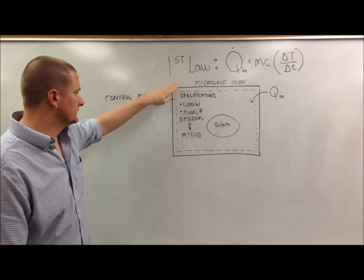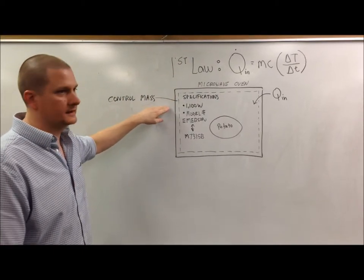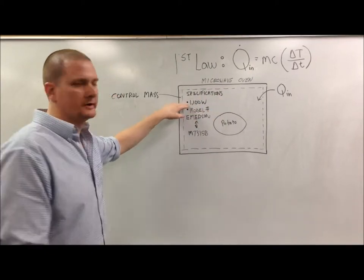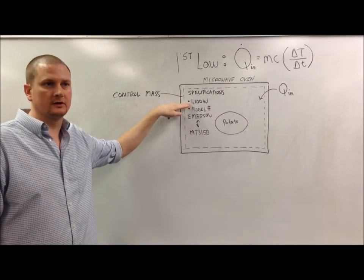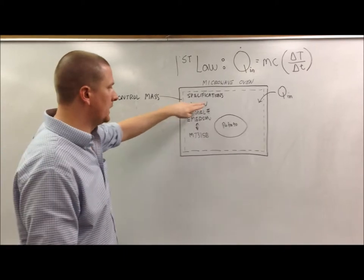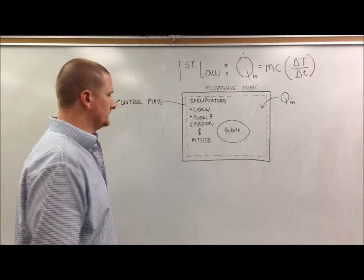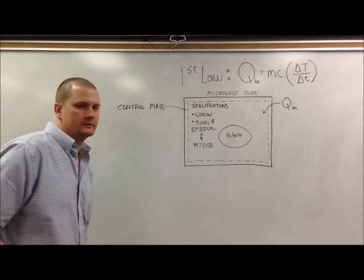So first off, before we get to this, we're going to talk about the actual unit we're going to be using. Our specifications for our microwave oven: it's an 1100 watt unit, which is the same as 1100 joules per second power delivery. The model of the microwave oven is an Emerson, model number M7315B.